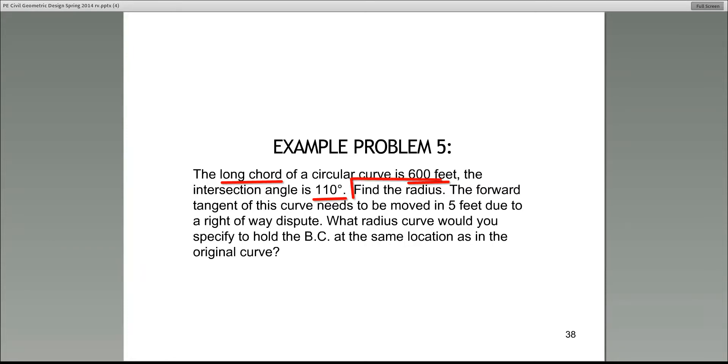Find the radius, so radius is one of the unknowns. Then, let's continue. The forward tangent of this curve needs to be moved in five feet due to a right-of-way dispute.